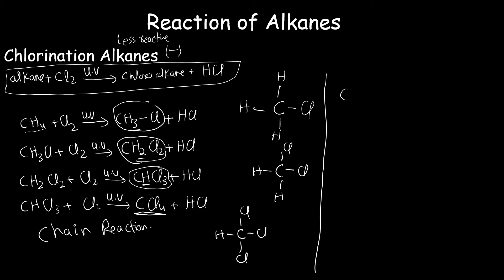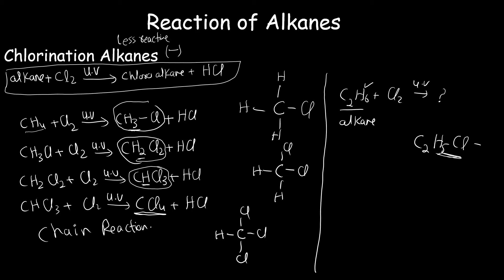A Cambridge-style question might give you: C₂H₆ (your alkane) reacting with Cl₂ under UV light, and ask what is your product? Since alkane reacts with chlorine via substitution, if the question is one mark, simply replace one hydrogen with chlorine. You write C₂H₅ with one chlorine substituted in place of hydrogen — your product is C₂H₅Cl.